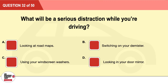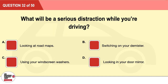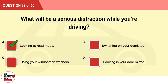Question 32: What will be a serious distraction while you're driving? A: Looking at road maps. B: Switching on your de-mister. C: Using your windscreen washers. D: Looking in your door mirror. The correct answer is A: looking at road maps.